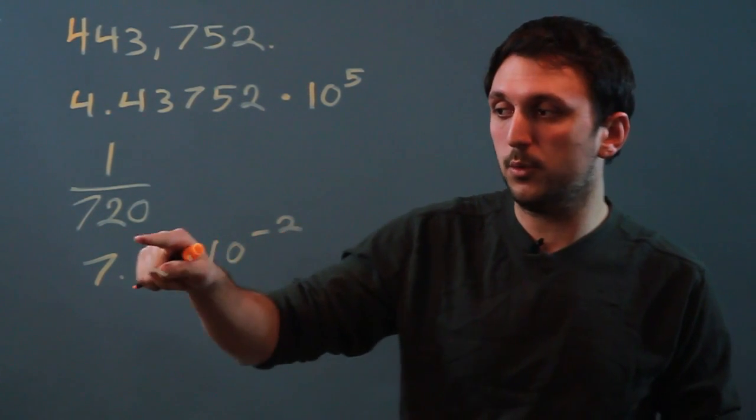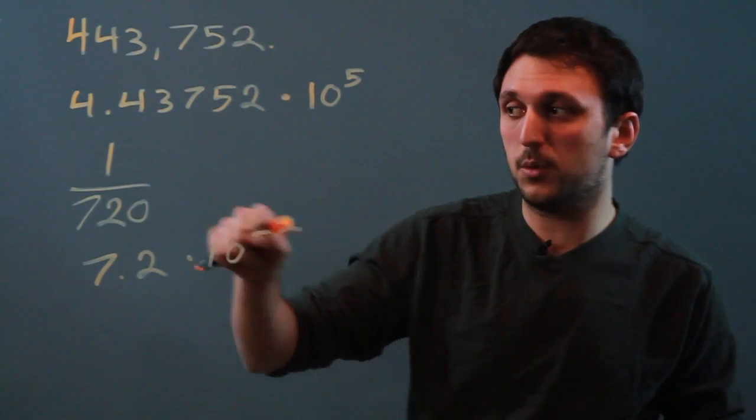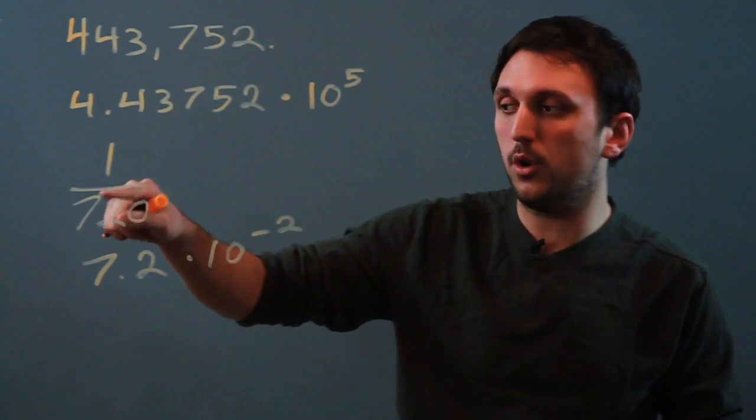Now, the 2 means we've moved over two places, and the negative, when it's in an exponent, means it will then become 1 over 720.